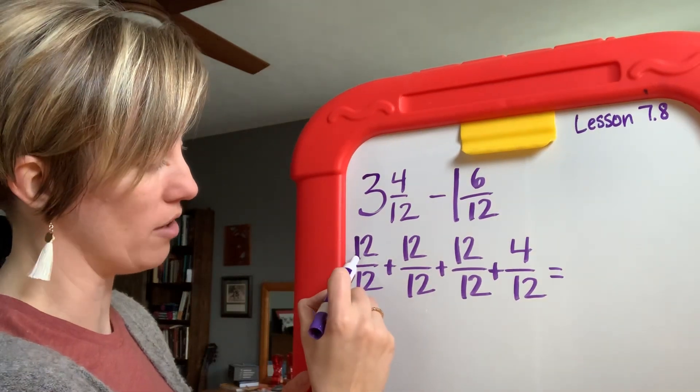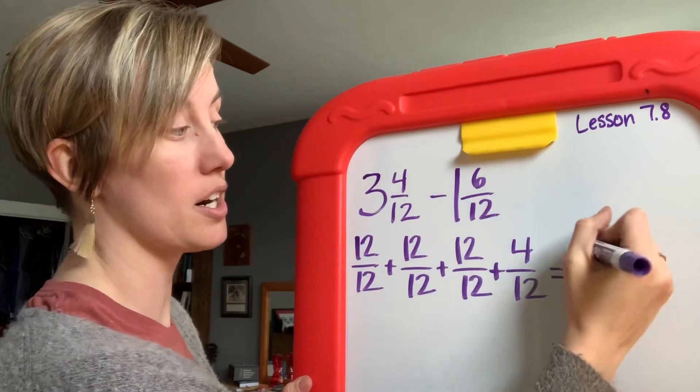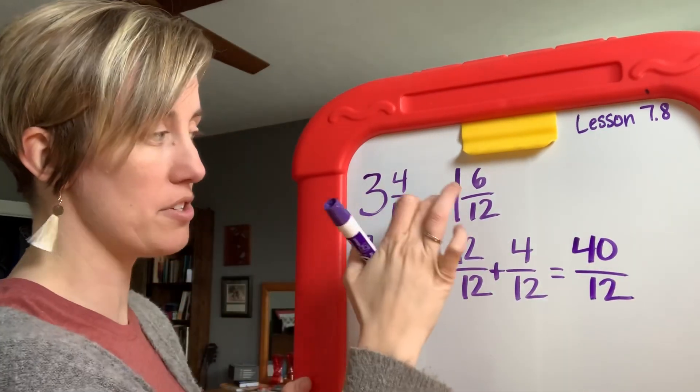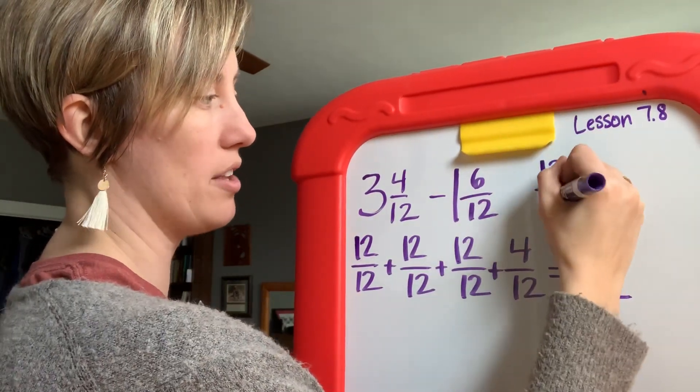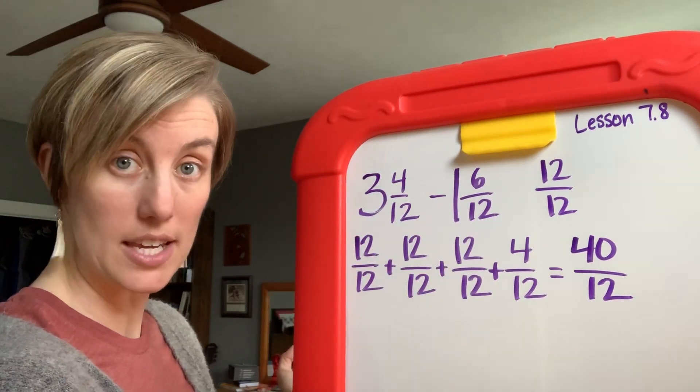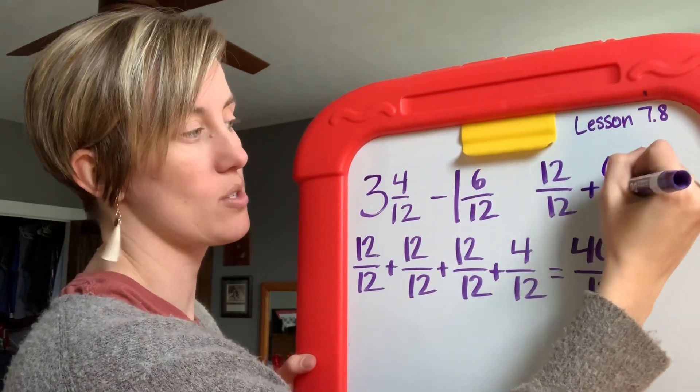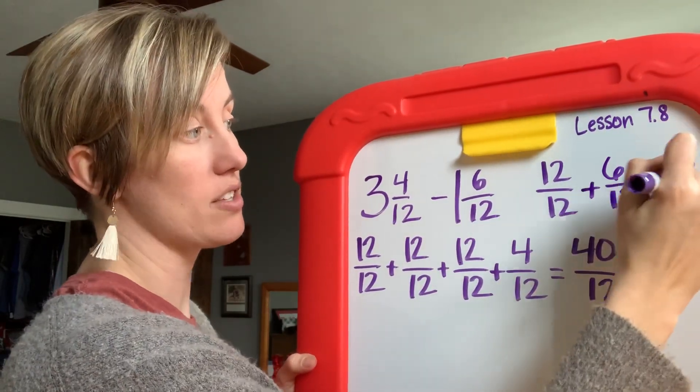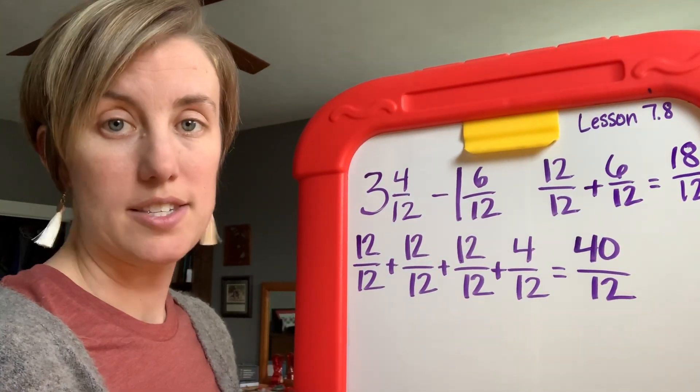So if I count up all the pieces of this pie I have 12, 24, 36, plus four, that's going to give me 40. And then I'm going to do the same thing for this one here. I'm going to have 12/12 because I know that this is, if I cut this one into the amount of pieces I need that it would be 12, that's 12/12 plus 6/12, that's going to give me 18/12.